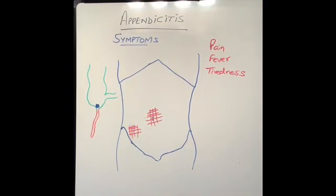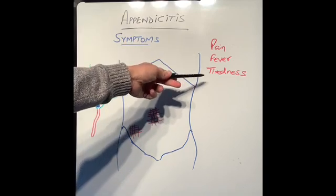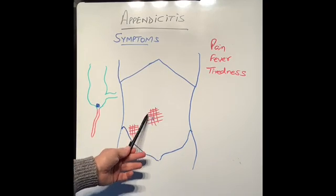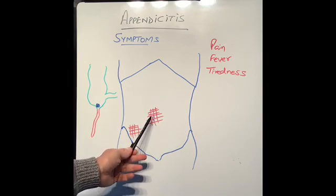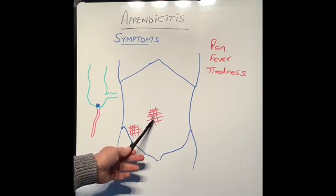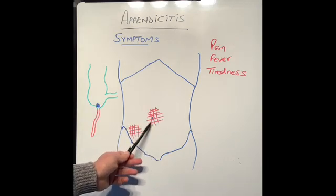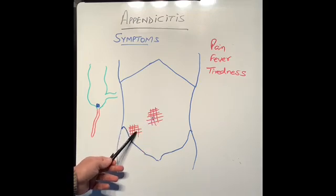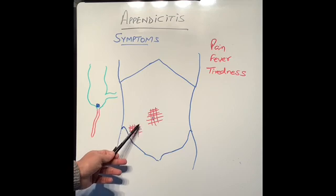What are the symptoms of appendicitis? The main symptoms are pain and fever. Pain typically starts around the belly button — this is because the nerve supply to the belly button is at the same level as that of the appendix. After a few hours, maybe 10–12 hours, the pain starts shifting to where the appendix actually is: on the right side of the tummy, below and to the right of the belly button.